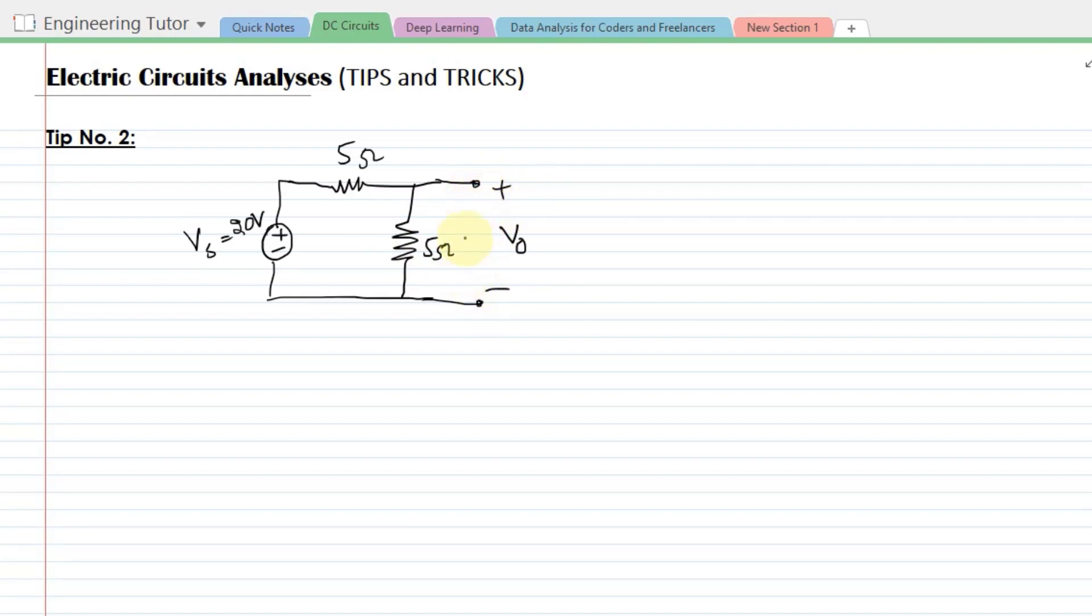So can we use the previous rule which we have developed ourselves? No, why not? Because this open circuit voltage is across this one, which let me call it v5. So the value of v5 is equal to v naught, and this v naught can be easily found out by using the voltage divider rule.